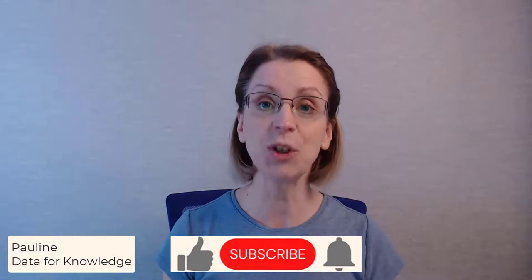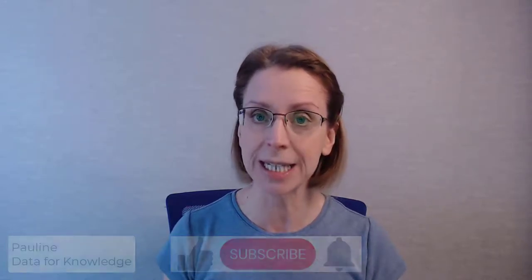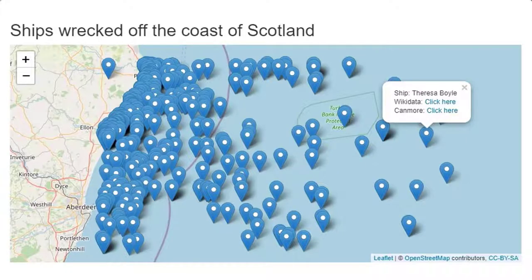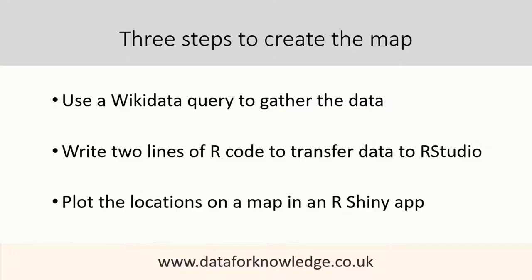Welcome. In this video, I'm going to provide an example of how you can take location data from Wikidata and map it inside an R Shiny app. For the data, we will use the location of where ships have been wrecked off the coast of Scotland and we will create this map. To do this, we are going to do three things: use a Wikidata query to gather the data, write two lines of R code to transfer the data, and then plot the locations on a map in an R Shiny app. Simple. Let's get started.